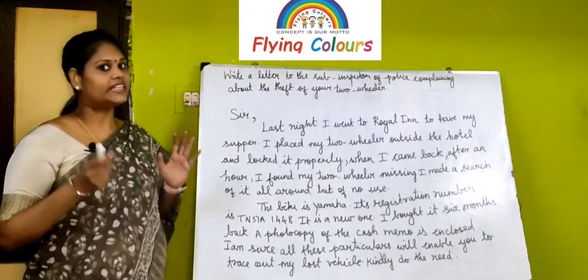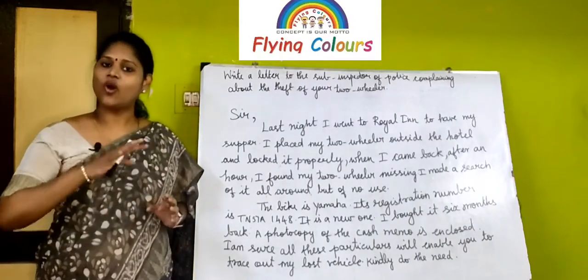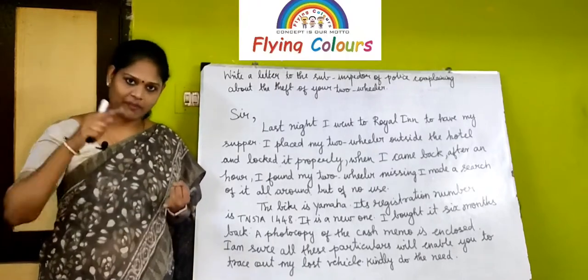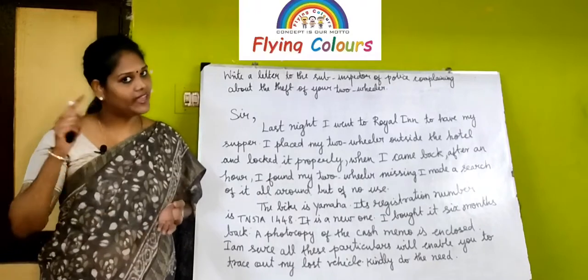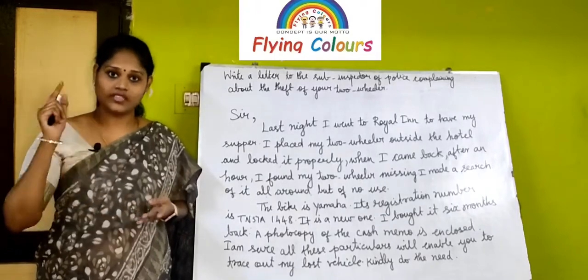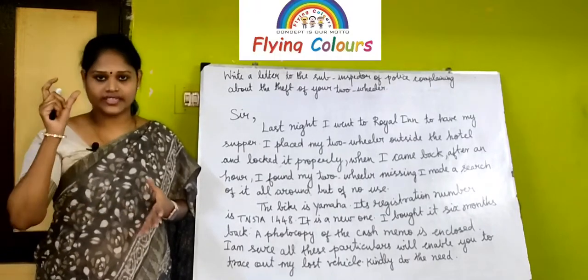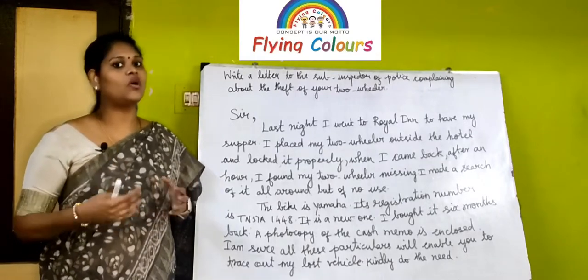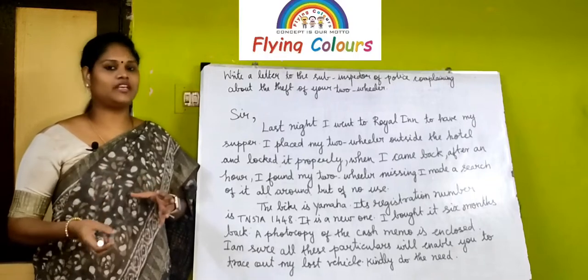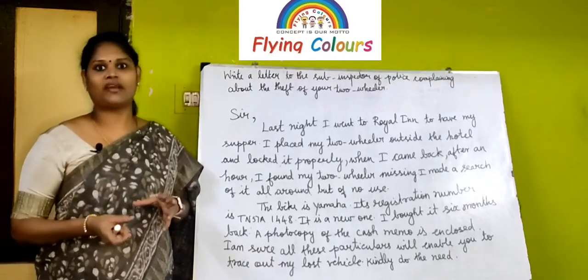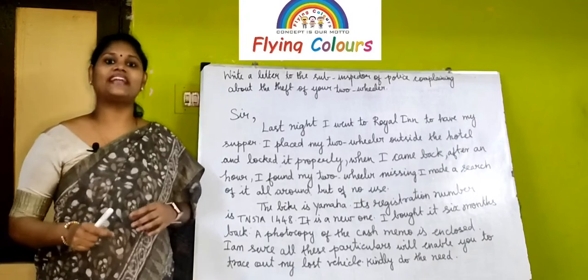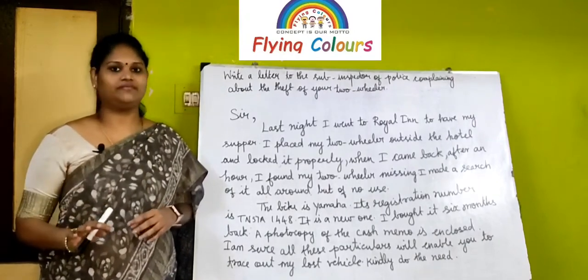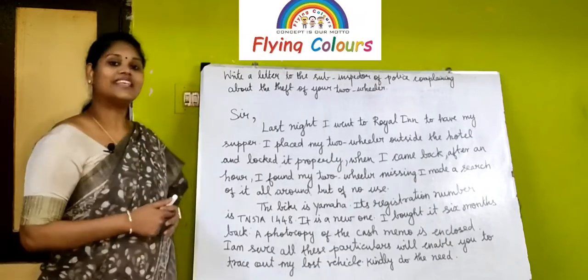In the body of the letter, you have to write all the particulars of your two-wheeler: where you parked it, at what time, in which area, the name of the bike, the TN number of the bike, and the color of the bike. You can also enclose the insurance and bill details of the bike. You need to write all the particulars of the bike.